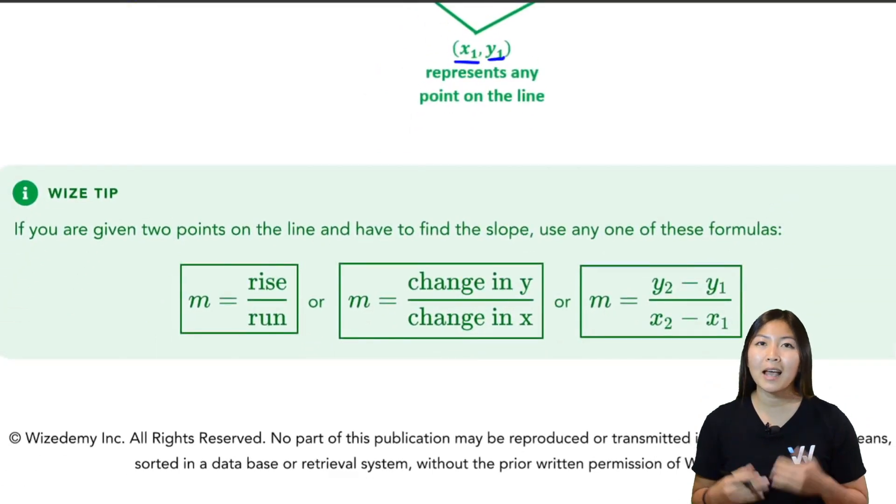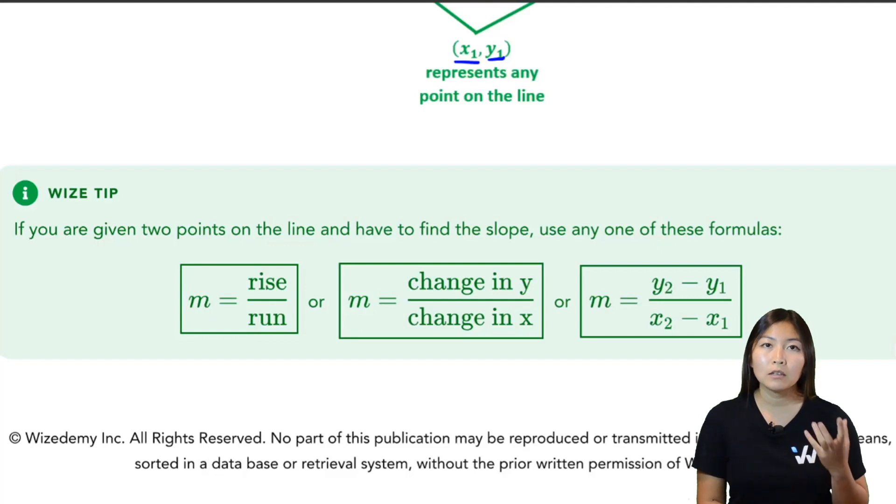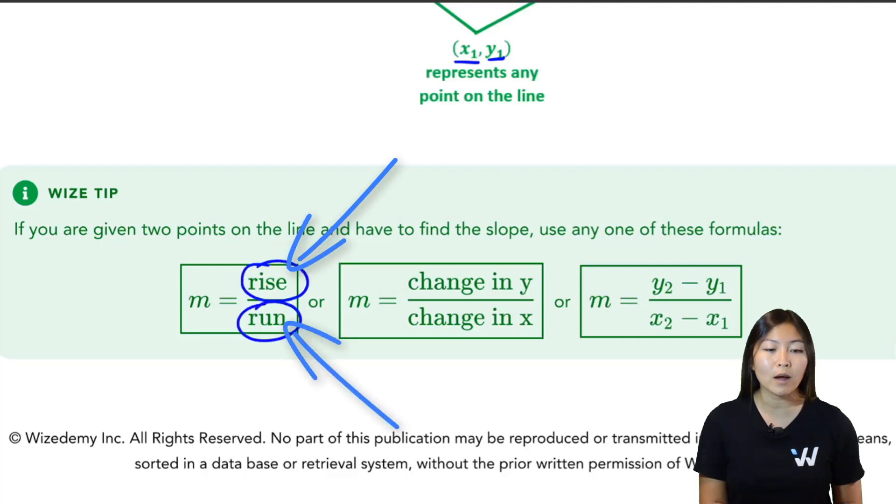Just a quick reminder on how to calculate slope, because we might have to do that. Slope again shows you how steep the line is, and very commonly it will be referred to as rise over run. So if you hear slope, you're thinking rise over run.